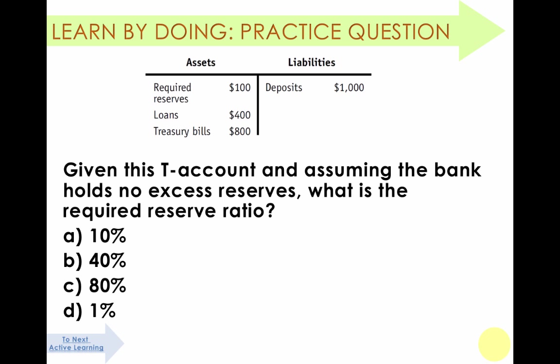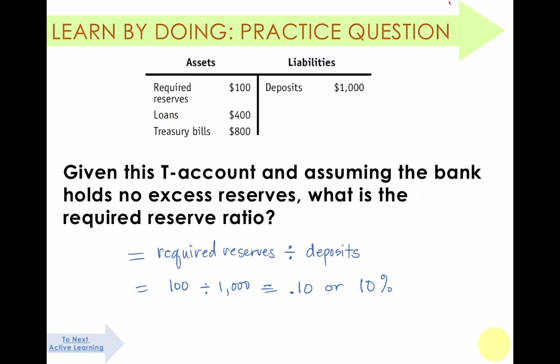Here are a few questions to test your knowledge. Given the following information, what's the required reserve ratio? The deposits are $1,000 and the required reserves are $100, so 100 divided by 1,000 is 10%.